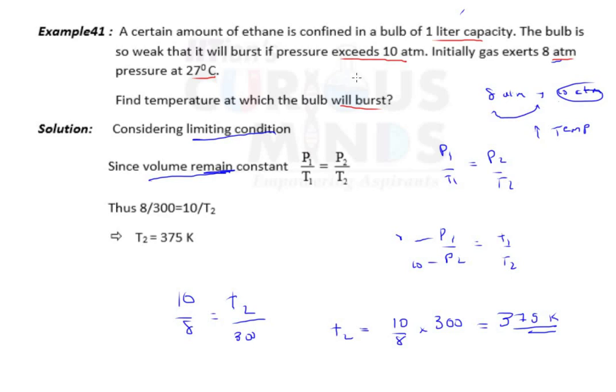The pressure is more. Whenever temperature is more, volume generally increases. But volume is fixed. One liter capacity is fixed. So that will result in bursting of the bulb.